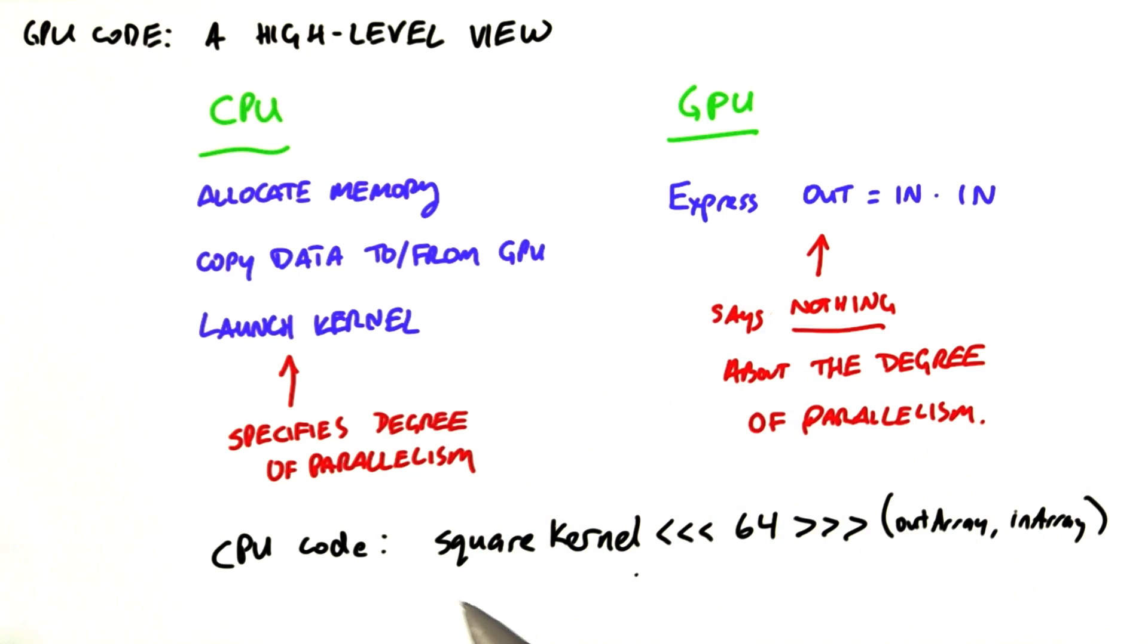The CPU program will look something like, okay, let's launch a square kernel. We're going to launch 64 threads. And the arguments to those threads are an output array and an input array.